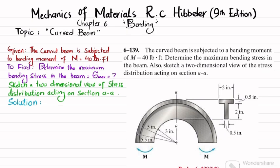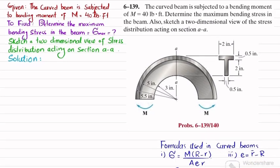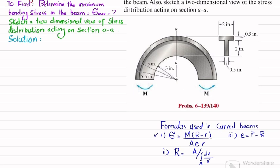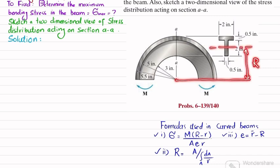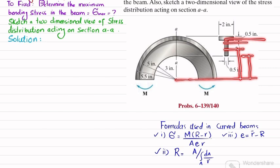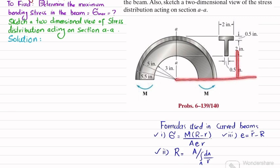Let's start with the solution. Here are the three formulas used for curved beams. In these formulas, sigma is the normal or bending stress, M is the given moment, capital R is the distance from the center of curvature to the neutral axis, small r is the distance from the center of curvature to any point where you want to find the stress, and R' is the distance from the center of curvature to the centroid of the section.